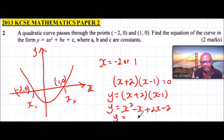So, finally, we have y is equals to x squared, then we have minus x plus 2x, that will give us positive x, and this will be minus 2.